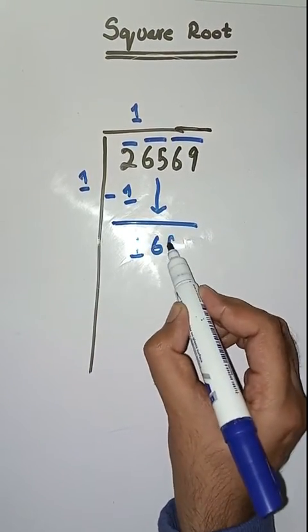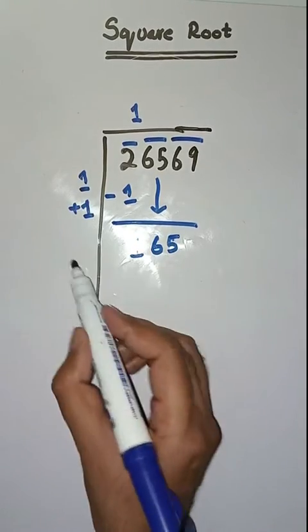So hum niche le ayenge. Yaha pe hum karenge 1 plus 1 which is equal to 2. Now we will take a number 6. 26 times 6 is 156. Minus karenge, humali pas aa jega 15 minus 6, 9.